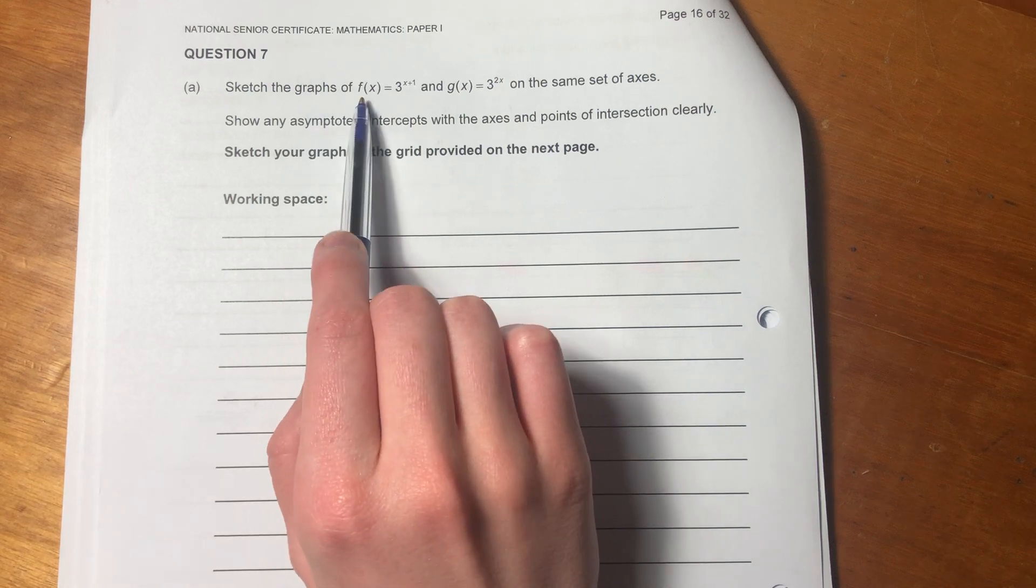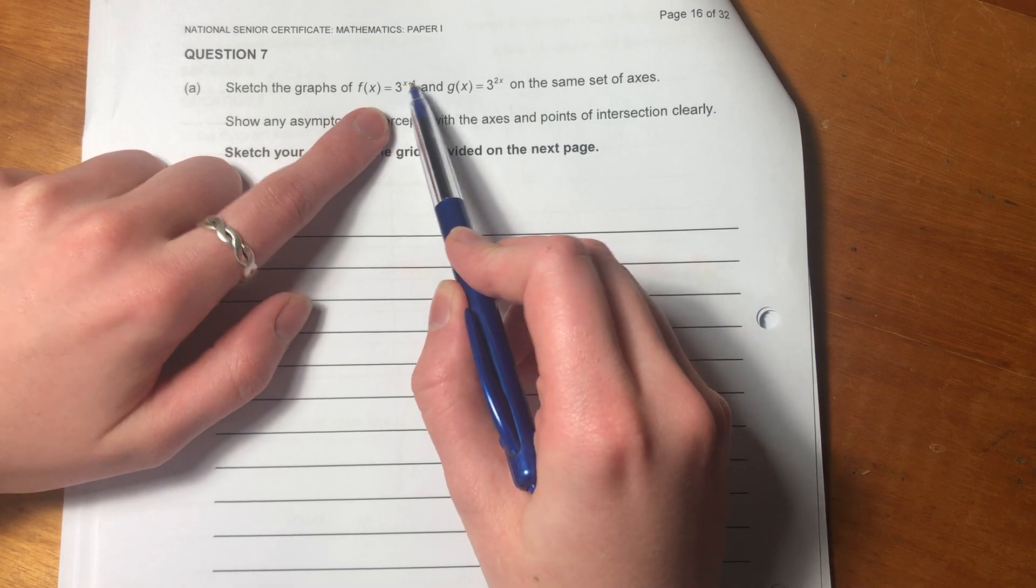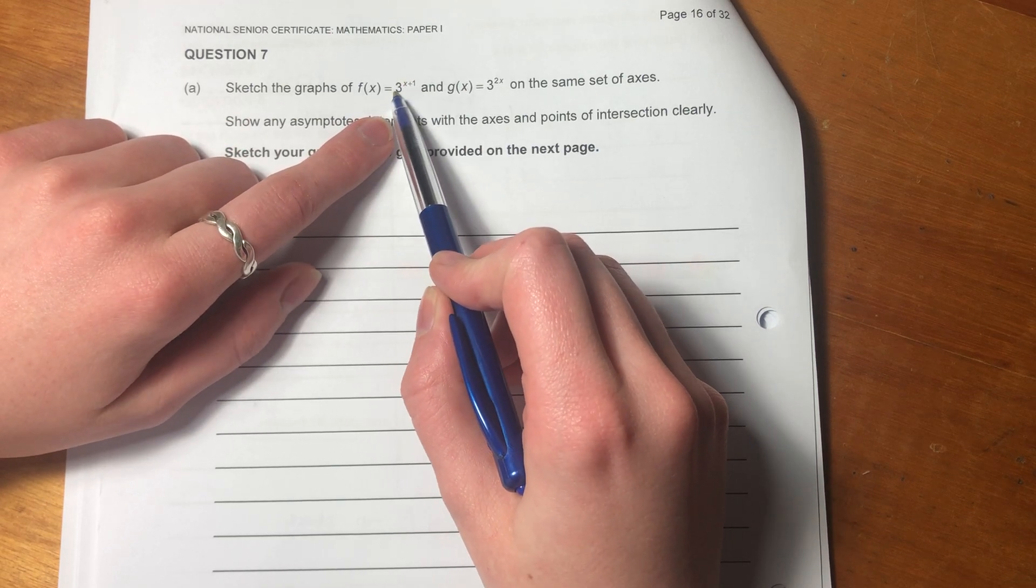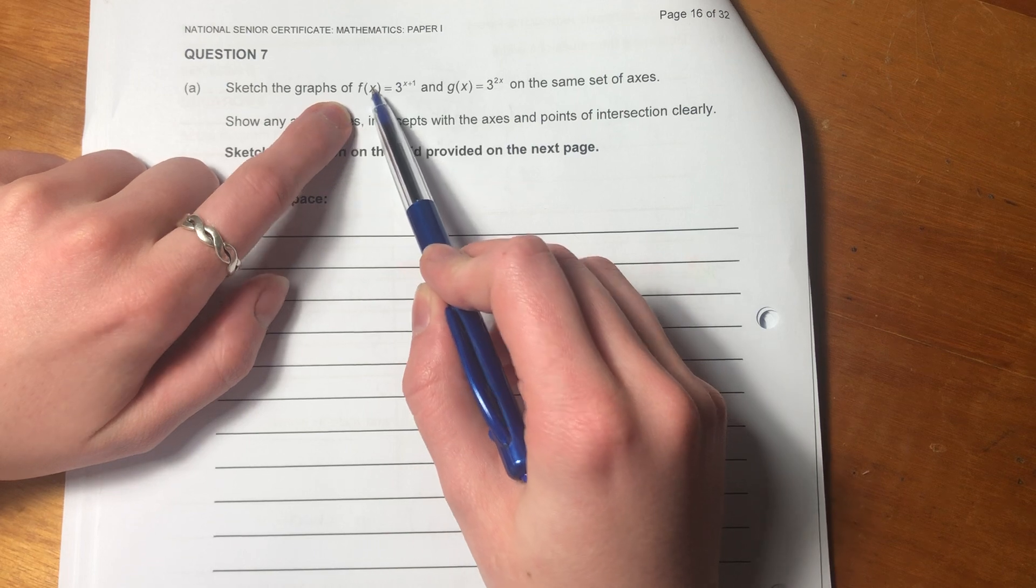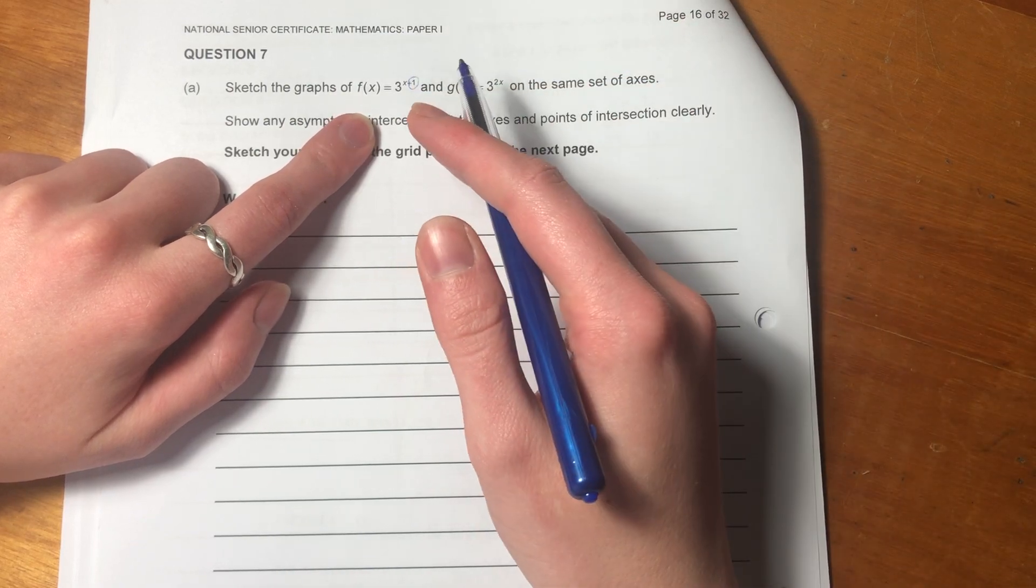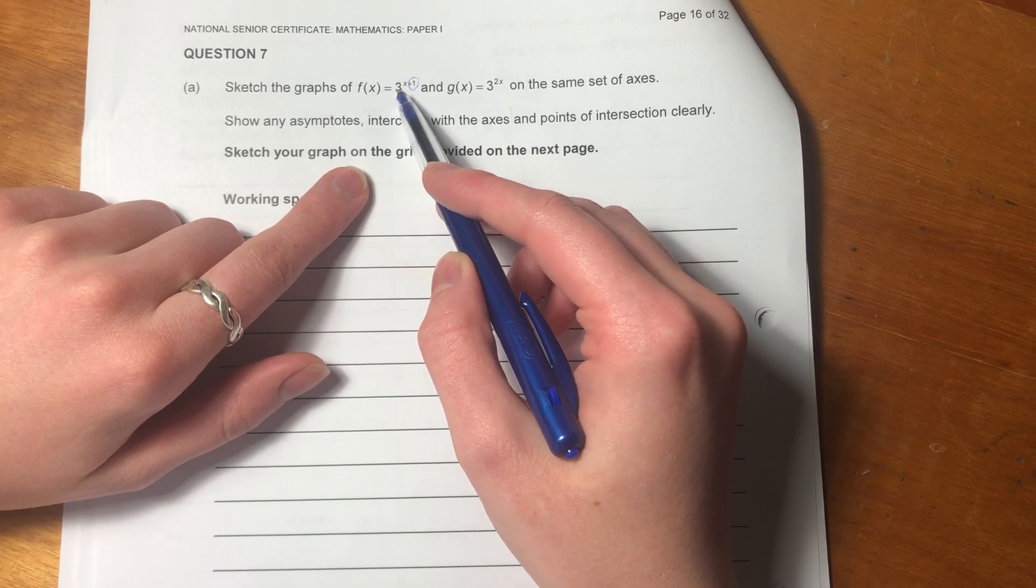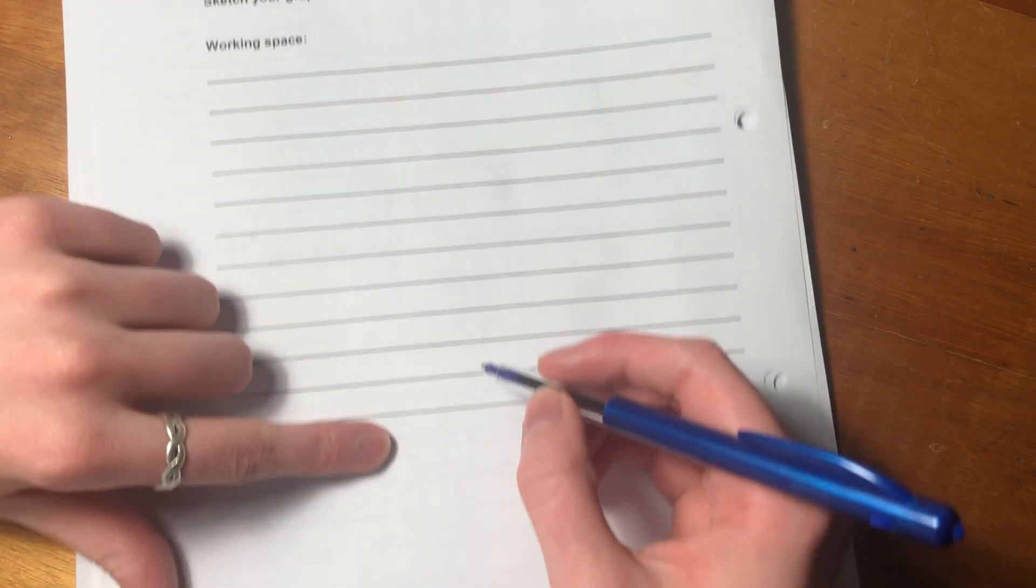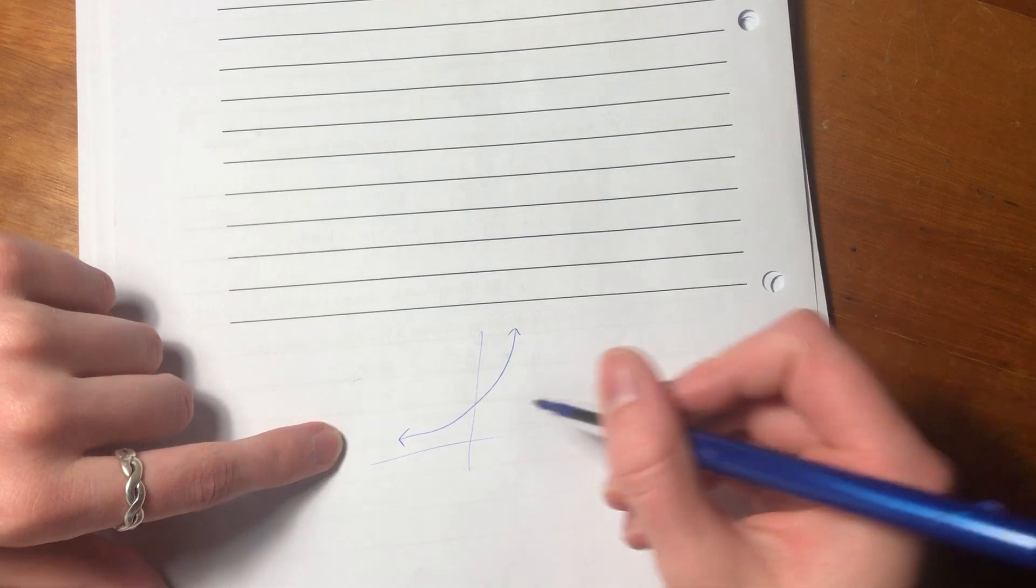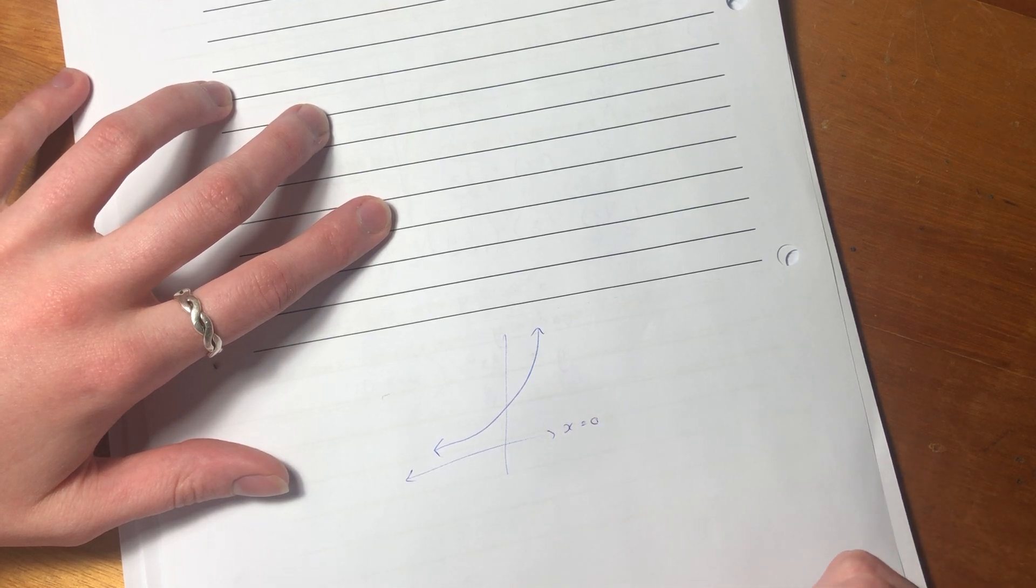It says sketch the graphs of f(x) equals 3 to the power of x plus 1. Important to say it correctly. So we know here that it's exponential because the property of an exponential is that you have a variable, the variable x in the exponent. But here we see that there's a shift, so we know our exponential is going to be shifted in some way. We see that this 3, the base value here, is greater than 1. So we're expecting to have an exponential that's shaped like this. We just have to find where the asymptote is. Because there's no shifts in the y, the asymptote we expect to be the x-axis.